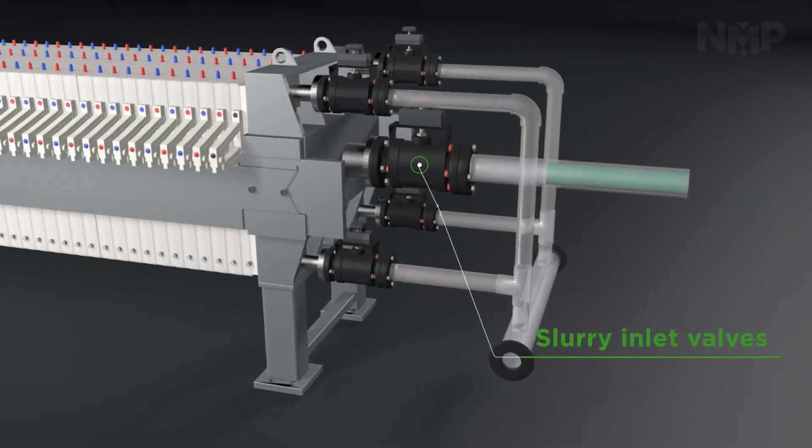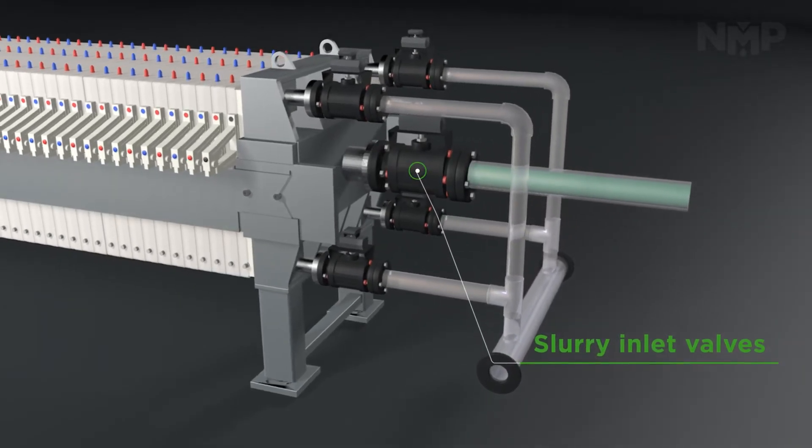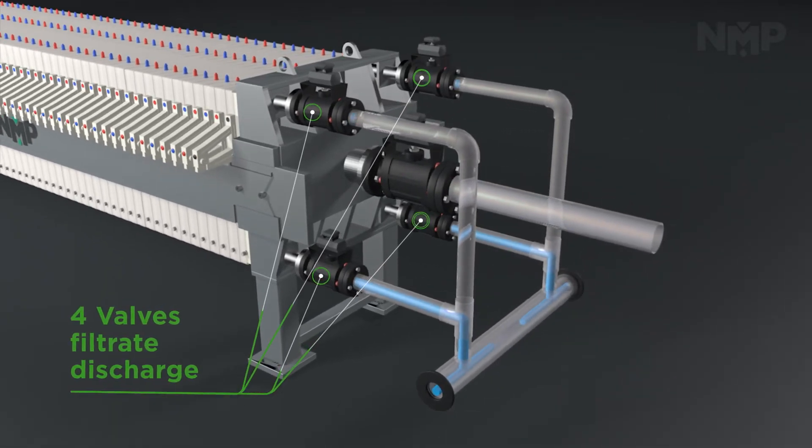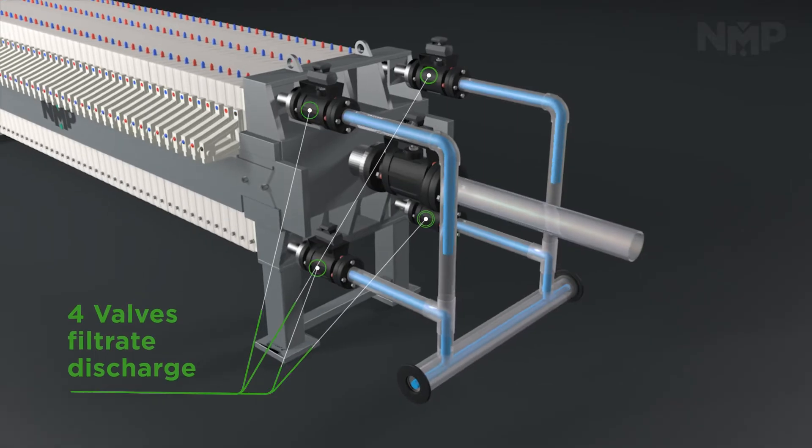The manifold consists of piping and valves which control the slurry inlet pipeline and connect the four corner filter discharge ports into a common discharge pipe.